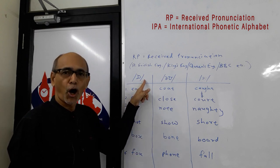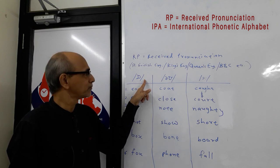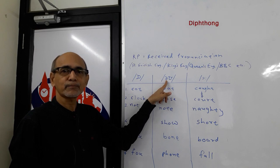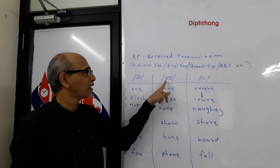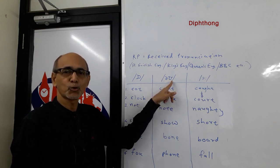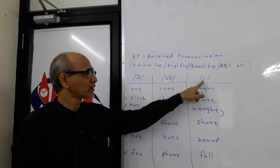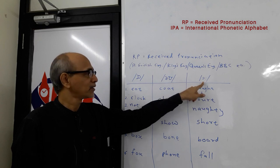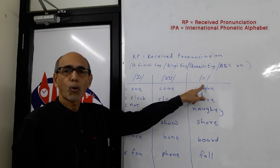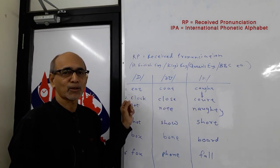The first sound is AW as in 'heart'. The second sound is actually a diphthong — a combination of two vowel sounds. The first is A and the second is U, and when they are together it becomes O, as in 'open'. The third sound is a typical British sound: O, as in 'water'.